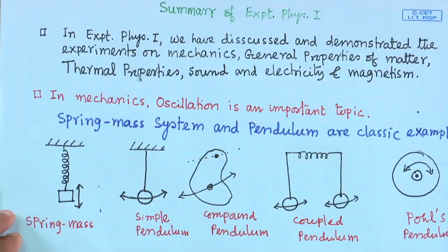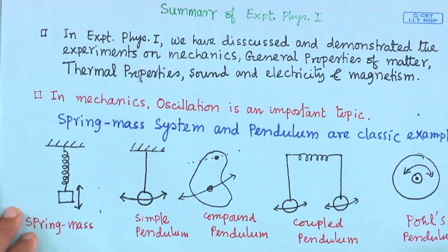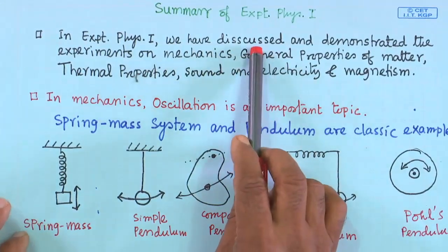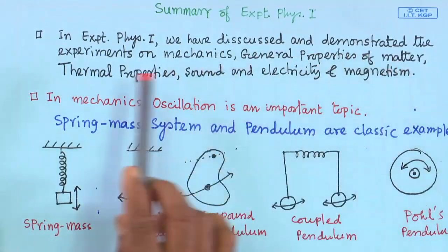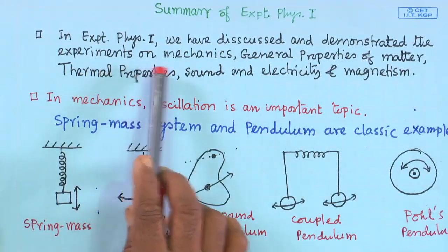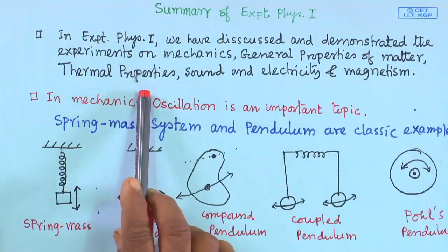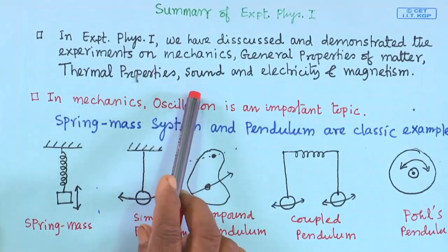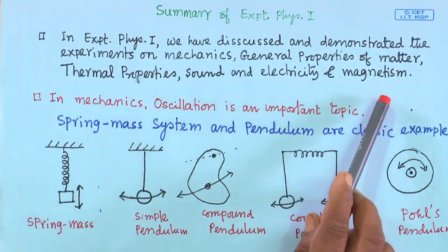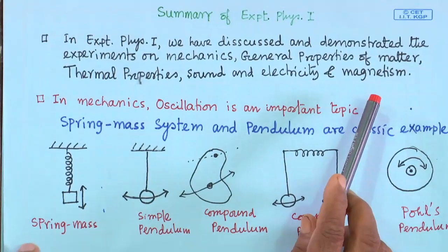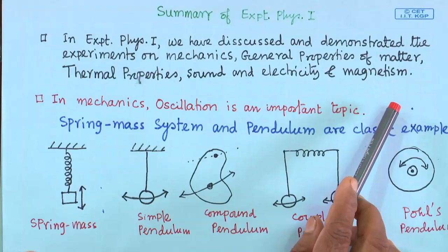In Experimental Physics 1, we discussed and demonstrated experiments on Mechanics, General Properties of Matter, Thermal Properties of Matter, Sound, and Electricity and Magnetism. There are many experiments we have demonstrated in the laboratory.